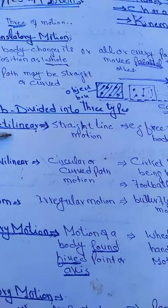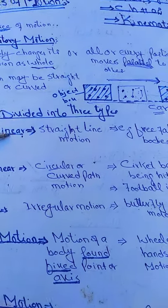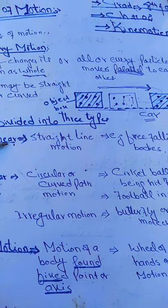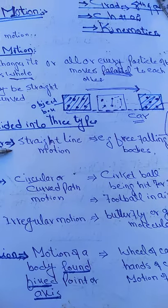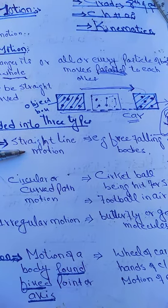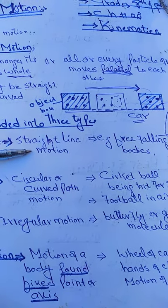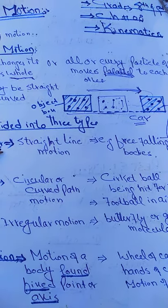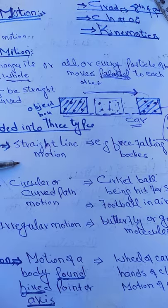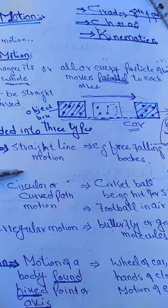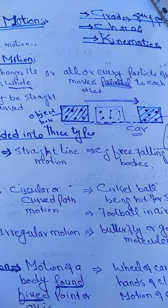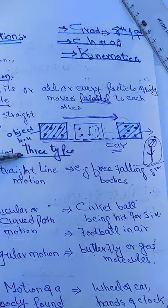What is meant by rectilinear motion? From the name itself - linear means straight line motion. Rectilinear motion is that type of motion in which a body moves in a straight line. That type of motion is called rectilinear motion.